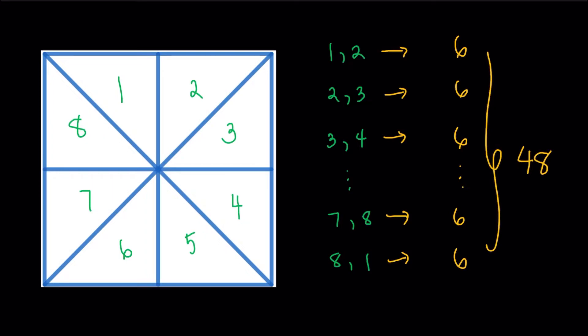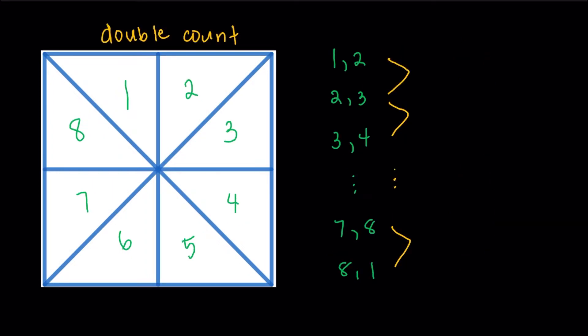Now there's a problem though, there's an issue of double counting. Because for example, under the one, two case, I could first choose the pair one, two and then select a third side, sorry, a third triangle, maybe in this case three. But that is the same thing as counting, let's just say, we counted two, three and then picking the third triangle as one. We can't consider them as a new case because it's generally just the same triple of triangles.